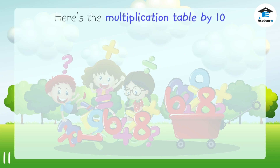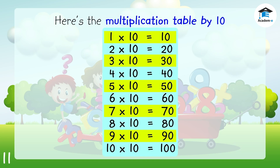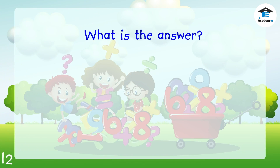6 times 10 — copy 5 and then add 0, the answer is 50. Here's the multiplication table by 10. What is the answer?